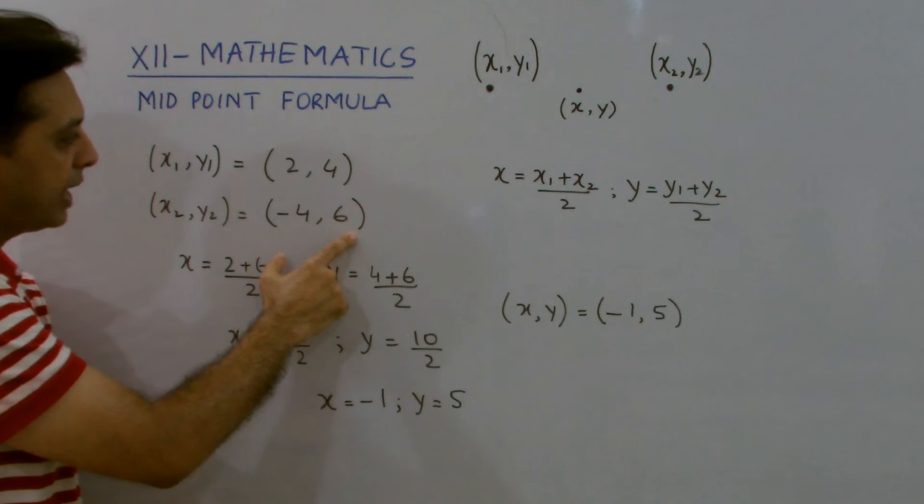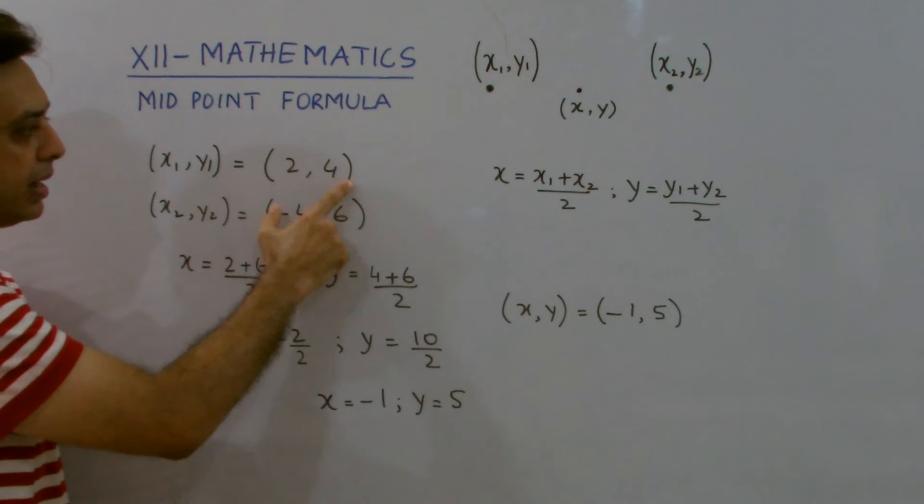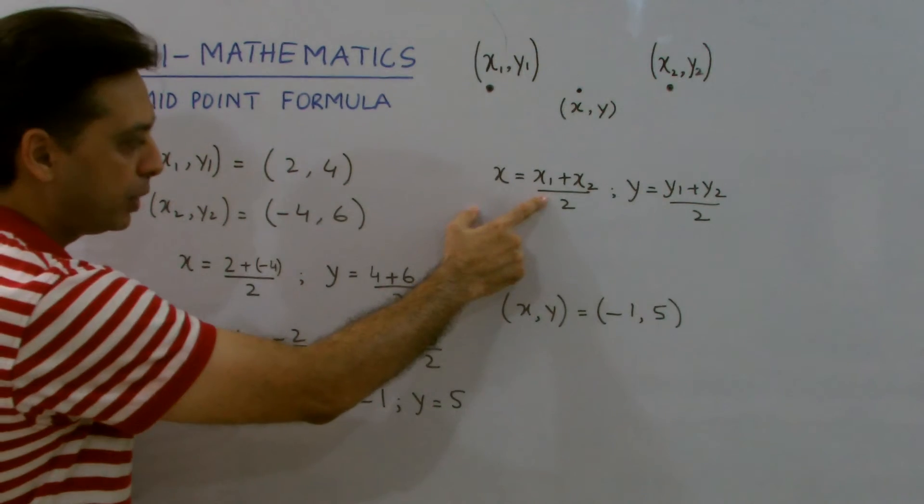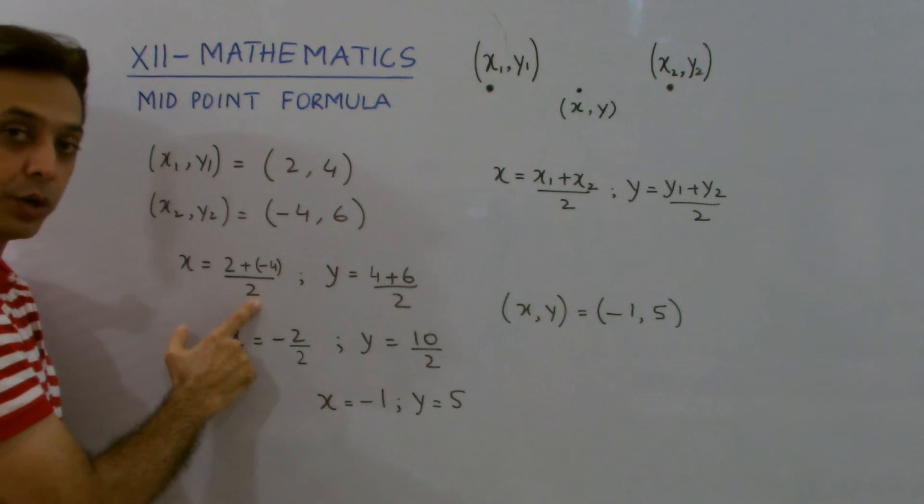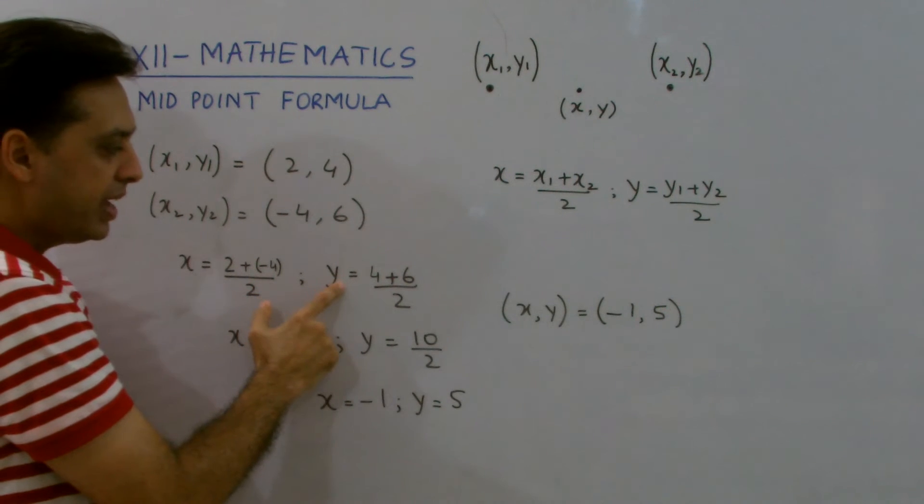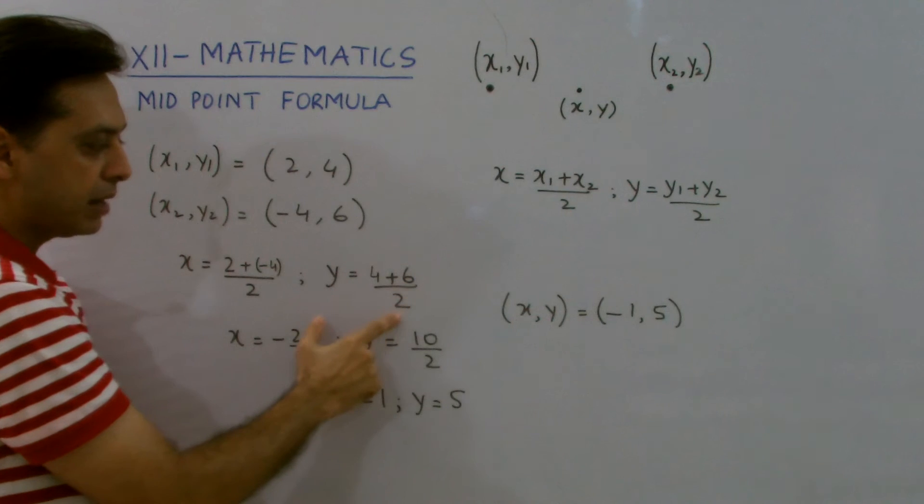Now, substituting the values of x1, y1, x2, and y2 in the given formula, I get x = (2 + (-4))/2 and y = (4 + 6)/2.